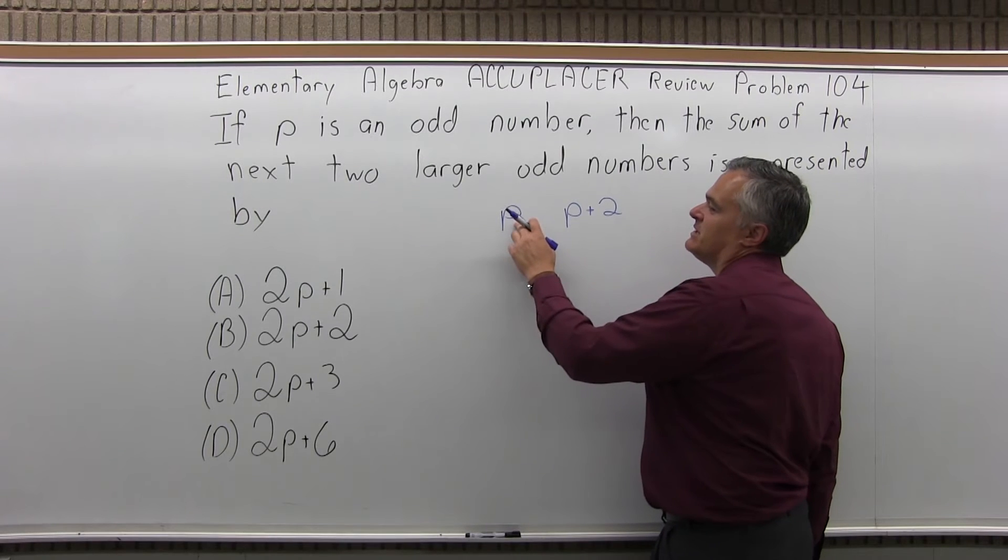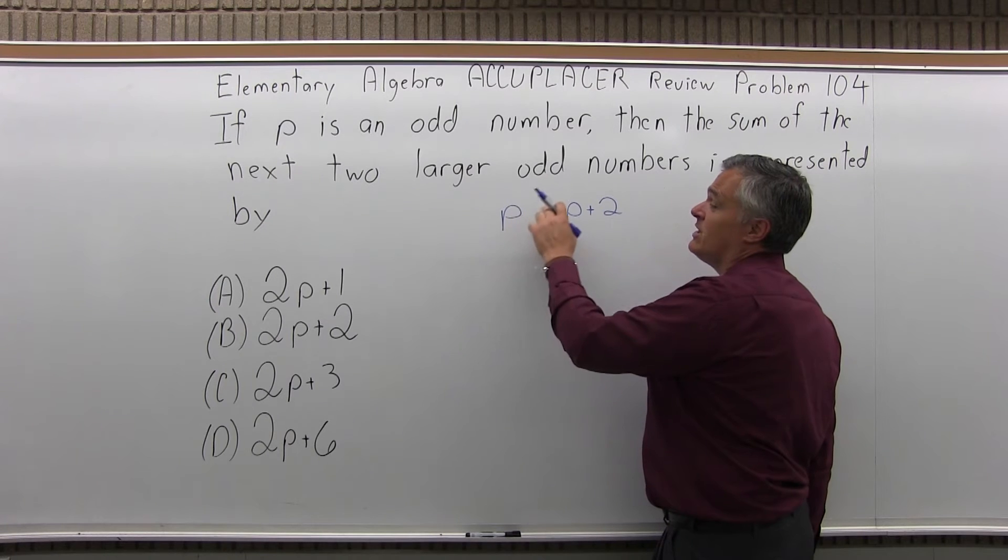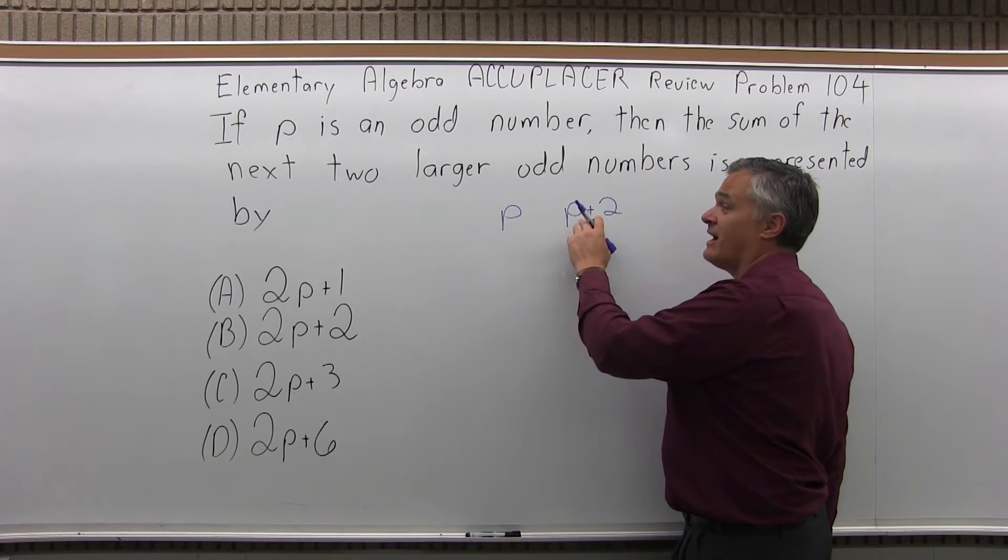For example, let's say P is three. P plus one would be four. Four is not odd. But if P is three, P plus two would be five. That's odd.